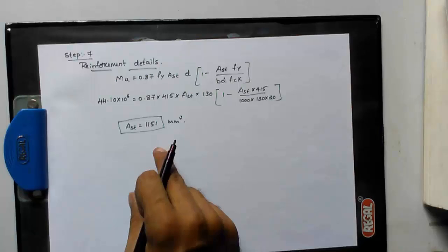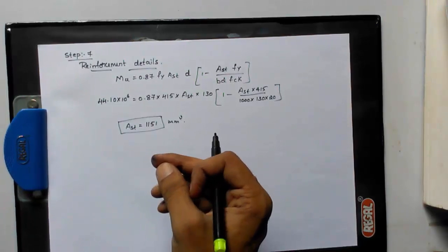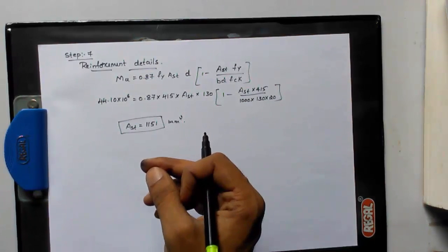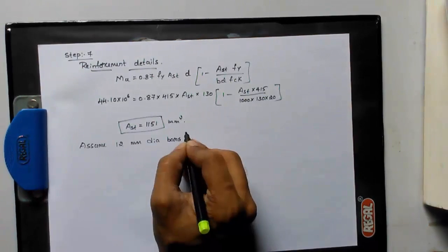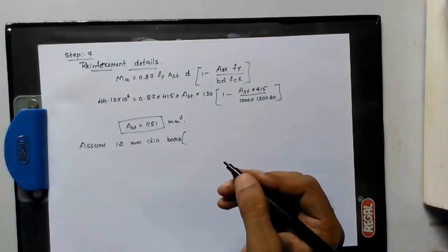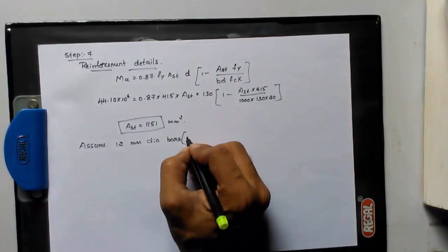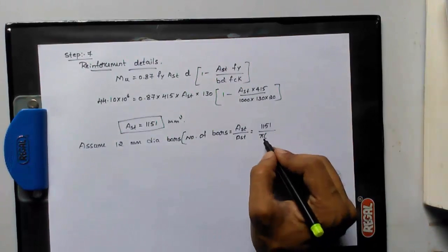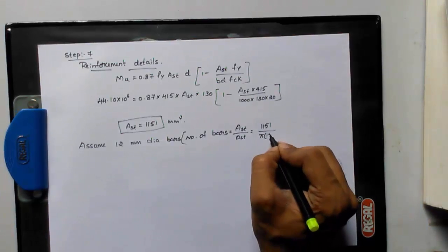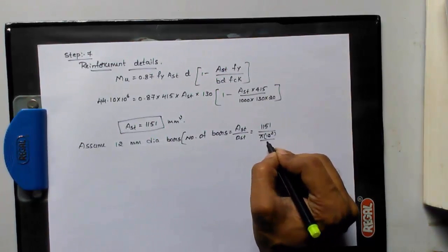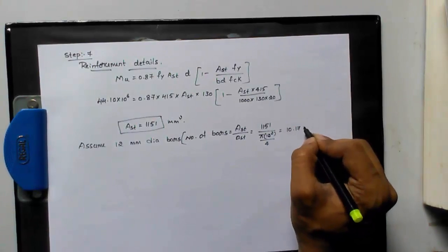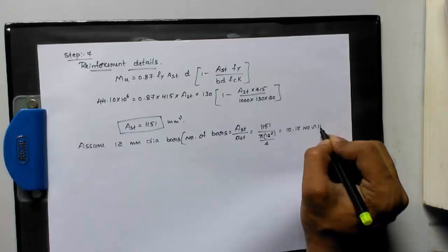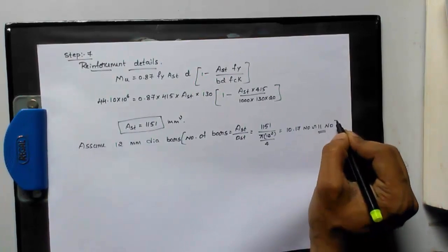When you need to provide what is the diameter of the bar, for staircase we usually give 12 mm dia bars. Therefore assume 12 mm dia bars of steel. Therefore, number of bars is equal to small ast is pi d square by 4. d is nothing but 12 mm. Pi 12 square by 4, you will get 10.17, so nothing but 11 numbers.